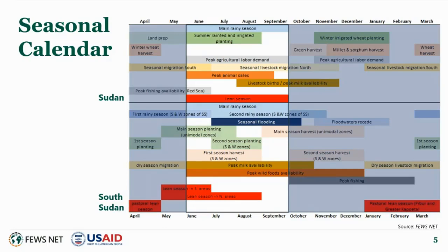In bimodal South Sudan, the first season harvest from the March to May rains becomes available between June and August. For herders, this period is marked by return migration to areas of origin and increased conflict between agricultural and pastoral groups, or between different pastoral and agropastoral groups. The increase in pasture and water resources typically results in improved body condition, improved milk availability, and improved income from animal sales.